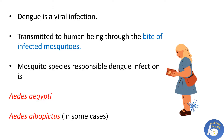Dengue is a viral infection transmitted to human beings through the bite of infected mosquitoes. The species of these mosquitoes are Aedes aegypti, and in some cases Aedes albopictus.